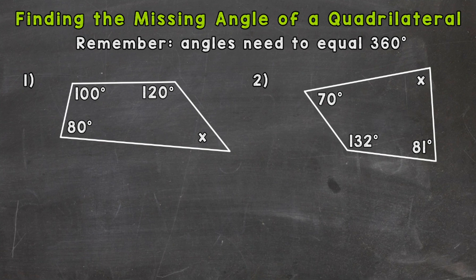So let's jump right into number one, where our missing angle is in the bottom right here, represented by that variable x. So we need to take a look at our knowns. We know we have 120 degrees, 100, and 80.